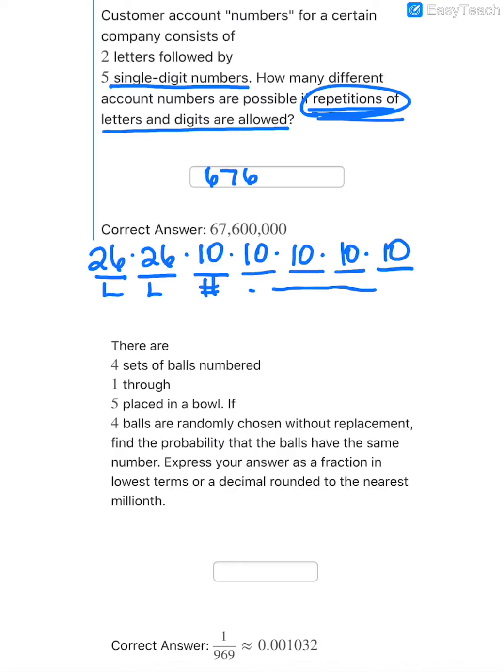So 26 times 26 would give me 676. And then when you multiply that by 10 five different times, that's going to add five different zeros on the end. And so we end up with 67,600,000 different account numbers for this company.